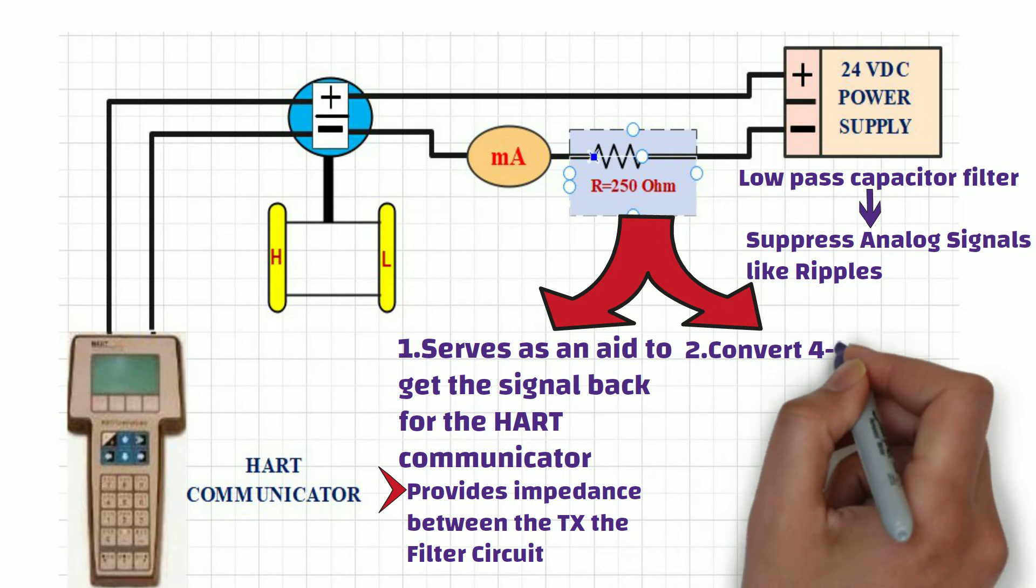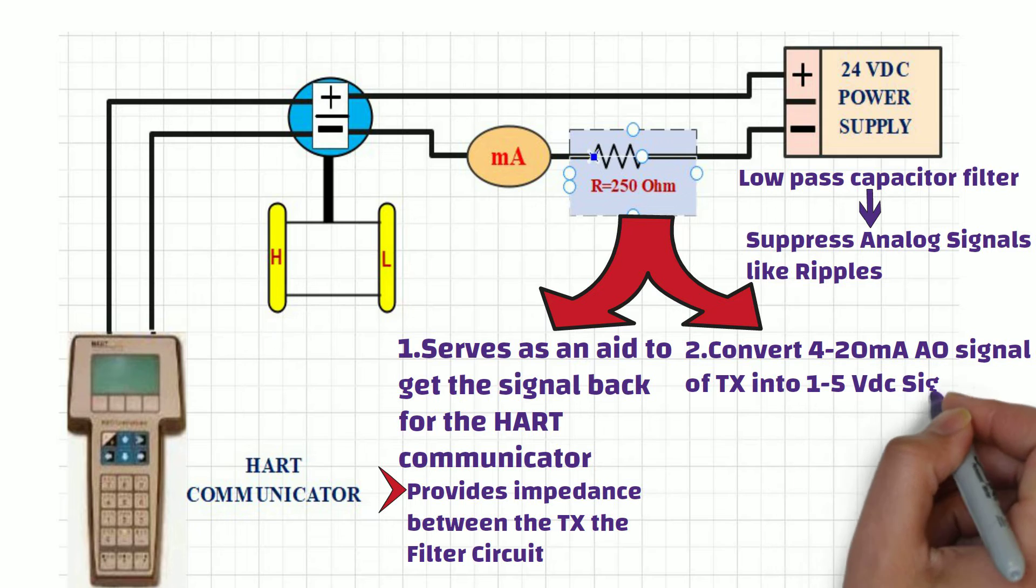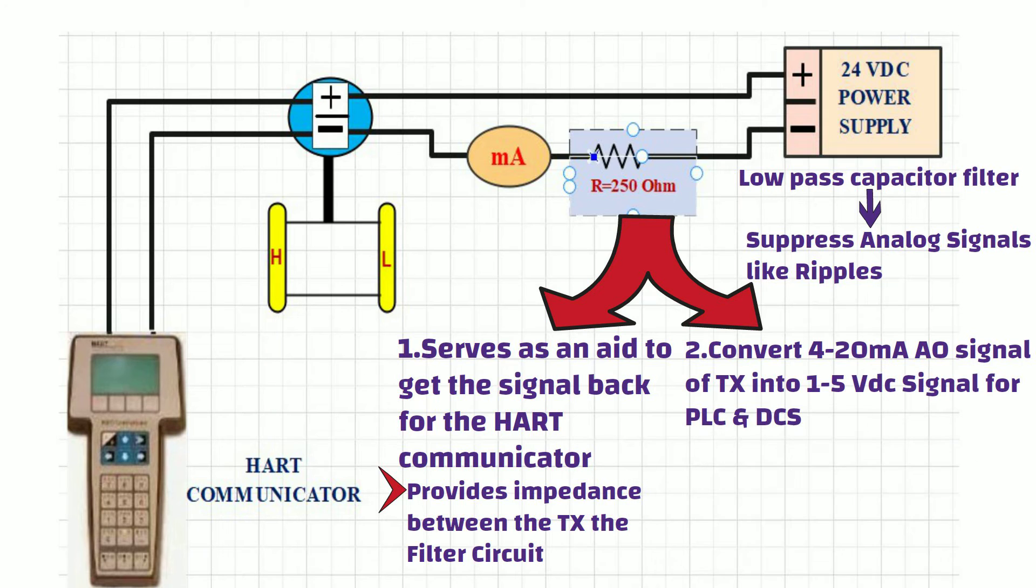Secondly, 250 ohm resistor is used to convert 4 to 20 mA analog output signal of transmitter into 1 to 5 volt DC signal, which is required for DCS and PLC.